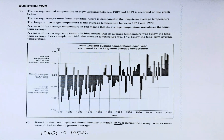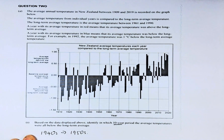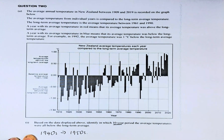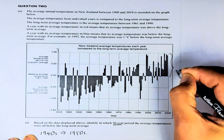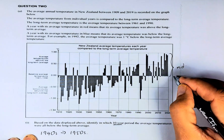The average annual temperature in New Zealand between 2009, which is here, to 2019, which is here, is recorded on the graph below. The average temperature from individual years is compared to the long-term average temperature. The long-term average temperature is the average temperature between 1961 and 1990. A year with the average temperature in red means the top part here is in red — the average temperature is above the long-term average. This is called the baseline.